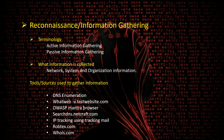When it comes to organization information, we mainly target employee details, the organization's website, how the architecture is maintained, addresses and phone numbers, and the background of the organization. These are the things we mainly try to cover when collecting information about a particular entity — whether it's a network, system, or organization.